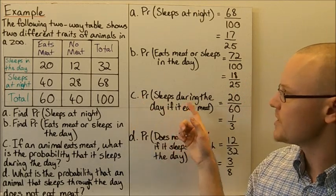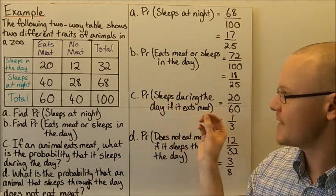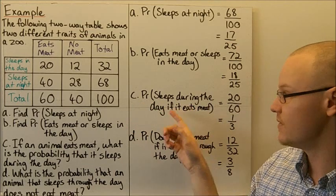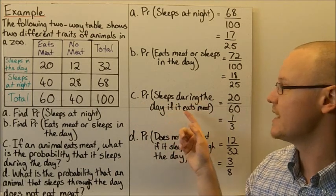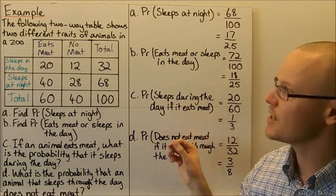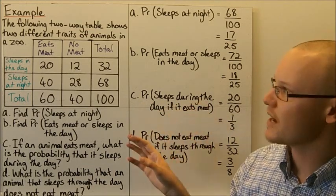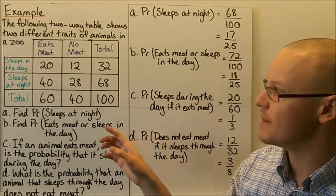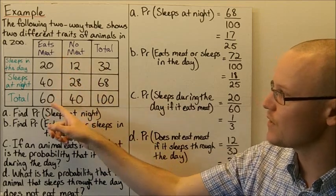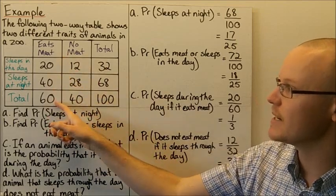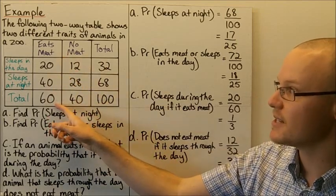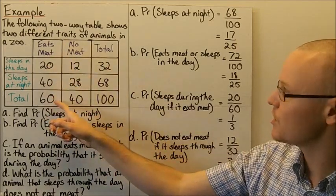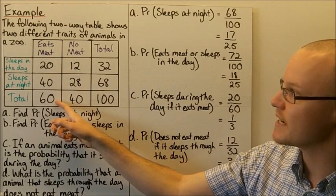For the probability that an animal sleeps during the day given that it eats meat: since the question specifies animals that eat meat, we look only at the total of animals that eat meat, which is 60.